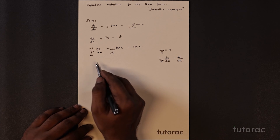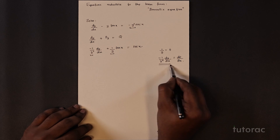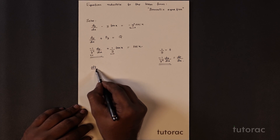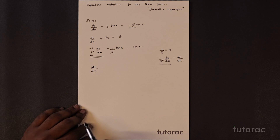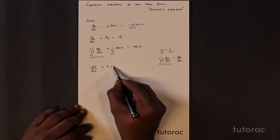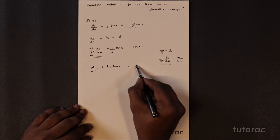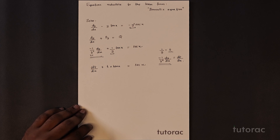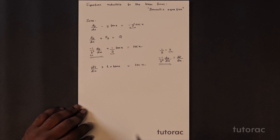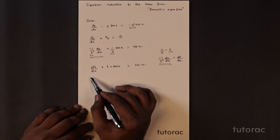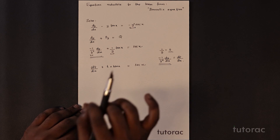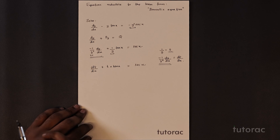After substitution, minus (1/y²)·dy/dx becomes dt/dx, and (1/y)·tan(x) becomes t·tan(x), giving: dt/dx + t·tan(x) = sec(x). Now the dependent variable is t, the differential coefficient is dt/dx, they are not multiplied by each other, and the order is 1 — so it is surely a linear differential equation.